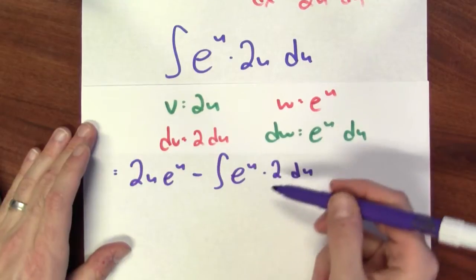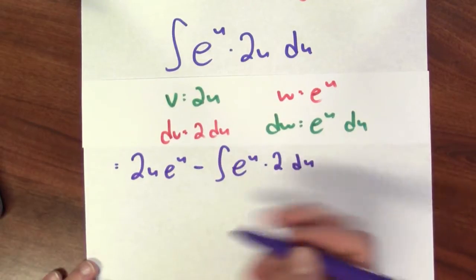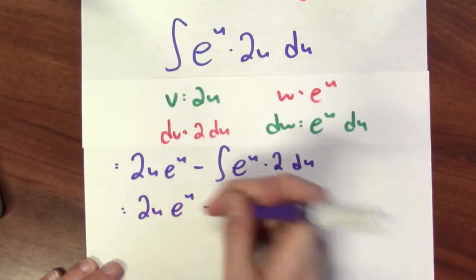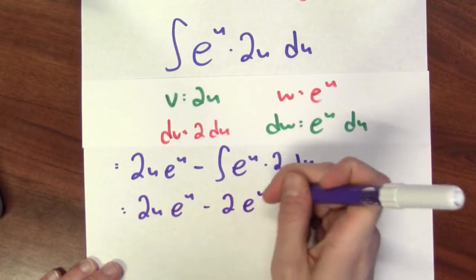But now, this is an integration problem that I can do. I know an antiderivative of e to the u. So, this is 2u e to the u minus 2e to the u.